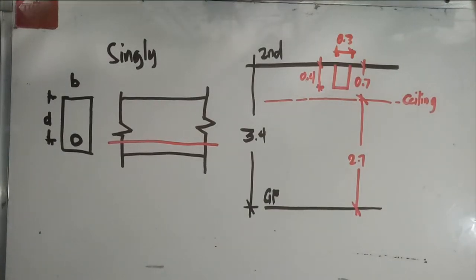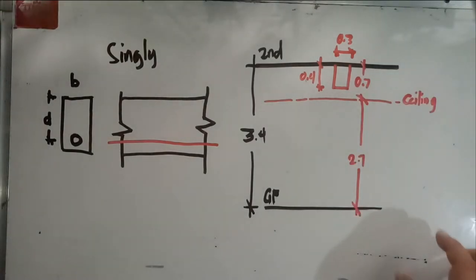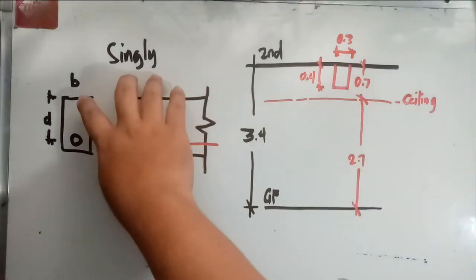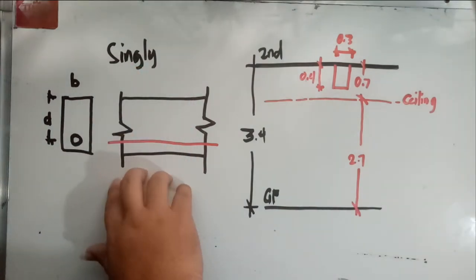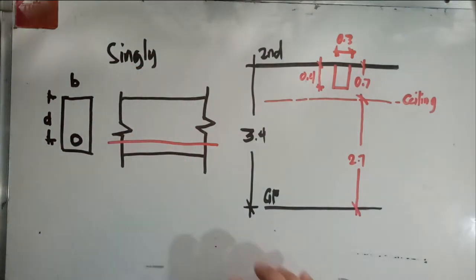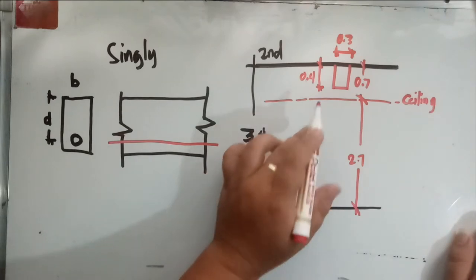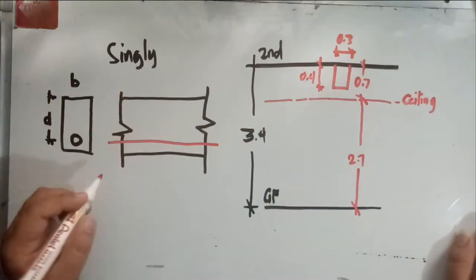With the beam section fixed, the first design approach is singly reinforced. We proceed with singly reinforced design until we check whether the section has reached the maximum allowed steel ratio, which is rho-max equal to 0.75 of the balanced steel ratio rho-balance.